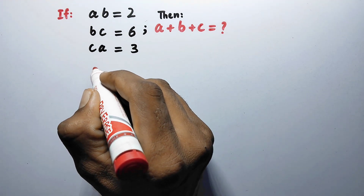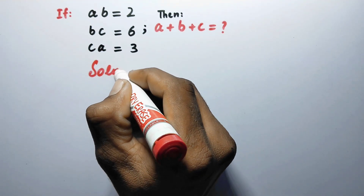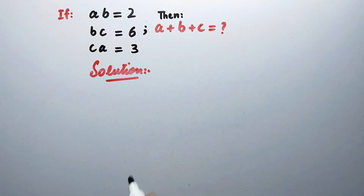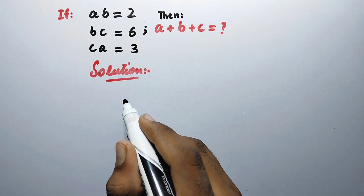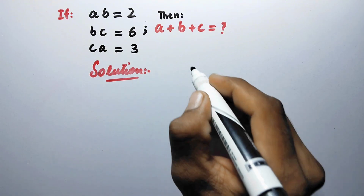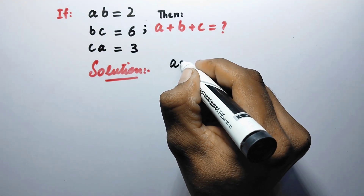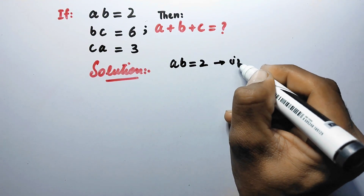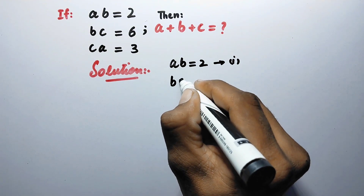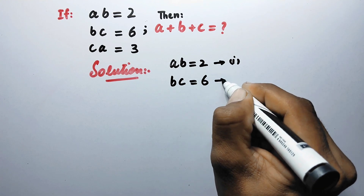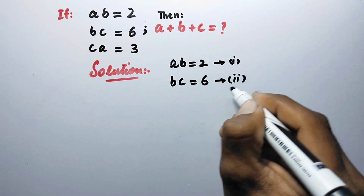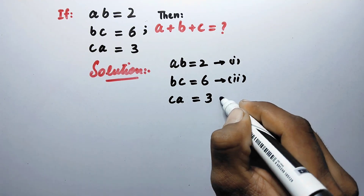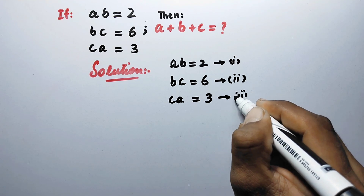So let us see its solution. Here to solve it we will mark these equations as: a·b = 2 as equation 1, b·c = 6 as equation 2, and c·a = 3 as equation number 3.